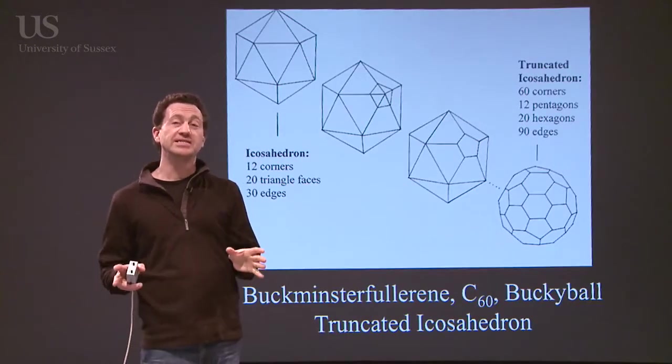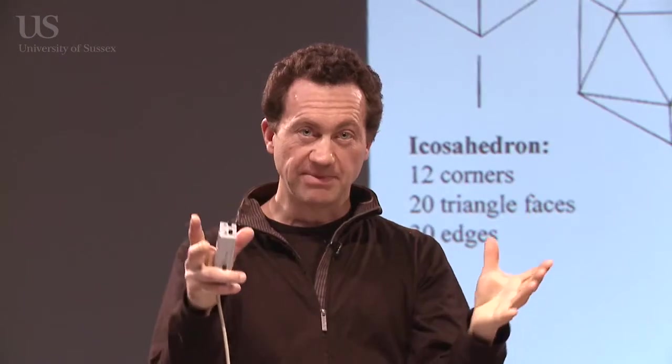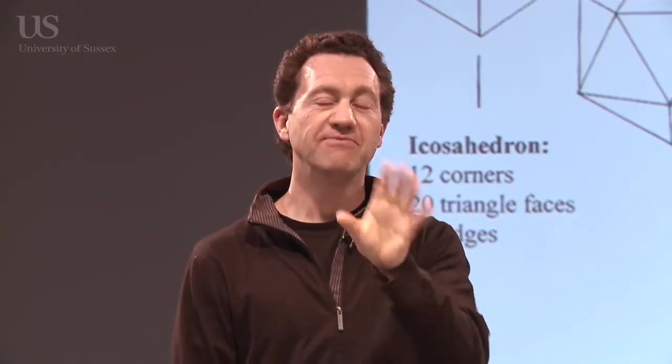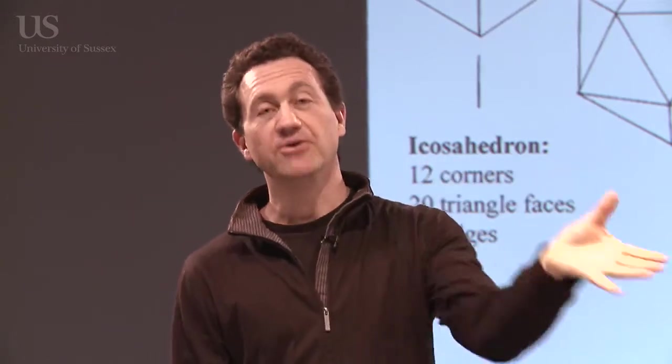It looks like a sphere, doesn't it? But actually, if it was a billiard ball and perfectly symmetrical, it would be a sphere. But actually, the mathematical name for this strange thing, although we know it as a soccer ball, is actually a truncated icosahedron.